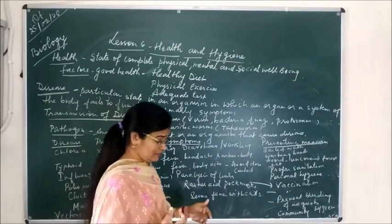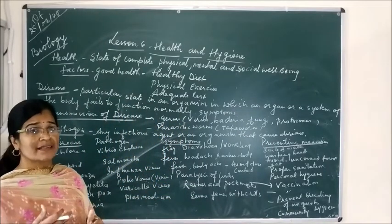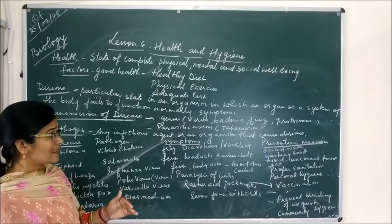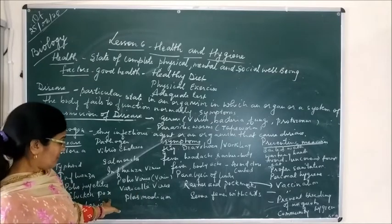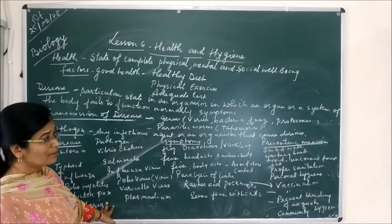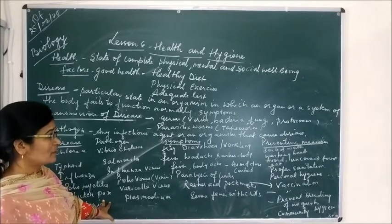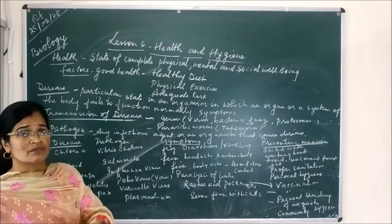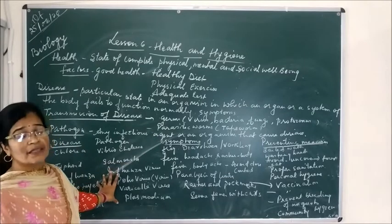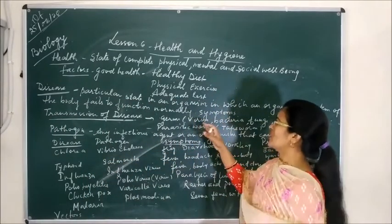The third agent is vectors, which are carriers of disease. For example, you have heard about malaria. Malaria is carried by the female Anopheles mosquito, which carries the malaria germ plasmodium. Whenever that mosquito bites a healthy person, the plasmodium is transferred to that person's body and they suffer from malaria. So the female Anopheles mosquito acts as a vector.